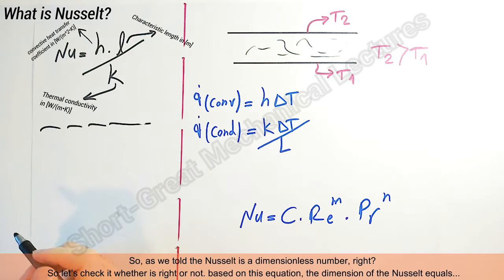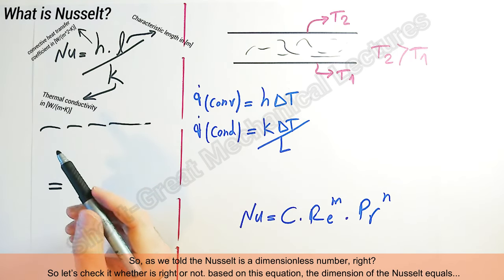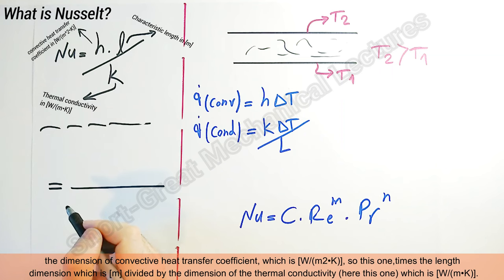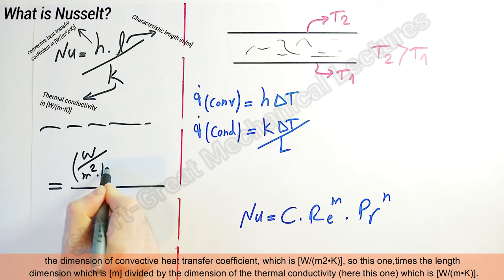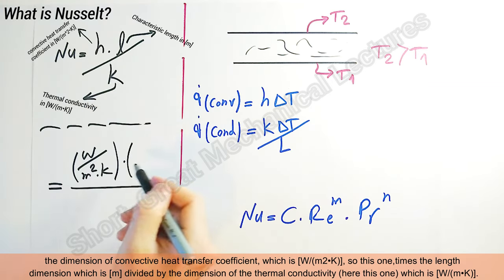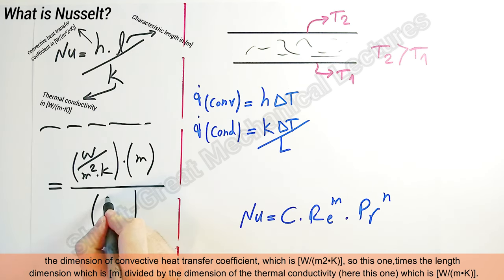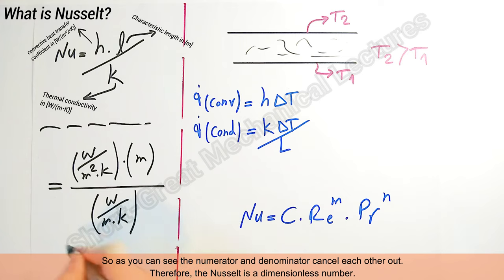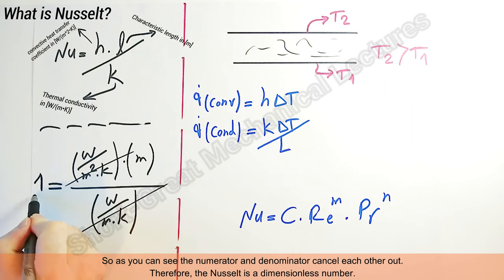Nusselt is a dimensionless number, so let's verify that. The dimension of Nusselt equals the dimension of the convective heat transfer coefficient — watts per meter squared kelvin — times the length dimension in meters, divided by the dimension of thermal conductivity in watts per meter kelvin. As you can see, the numerator and denominator cancel each other out, therefore Nusselt is indeed a dimensionless number.